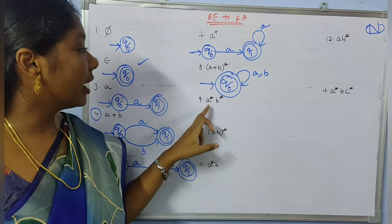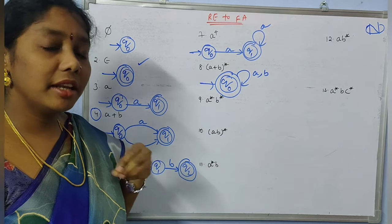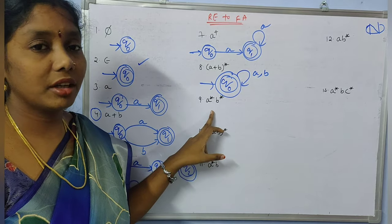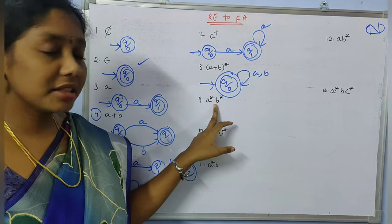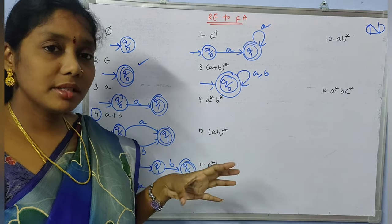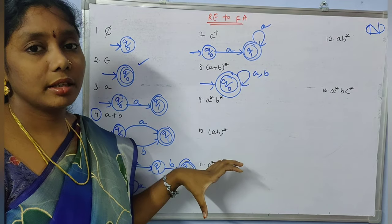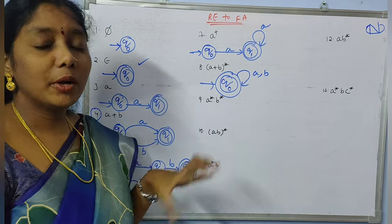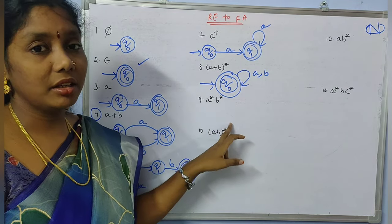Coming to example 9, 'a*b*'. Here 'a' can occur any number of times and 'b' can occur any number of times, but there is a restriction — we should not mix them. The restriction is that all 'a's should be followed by all 'b's. So first we need all 'a's and after that all 'b's.